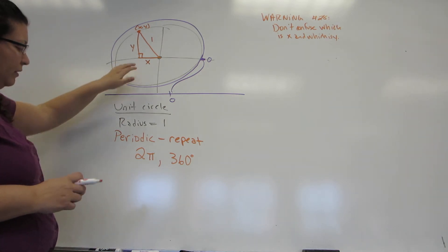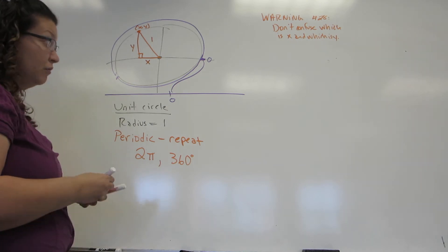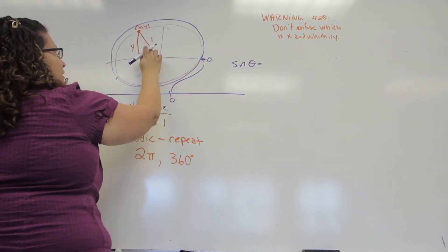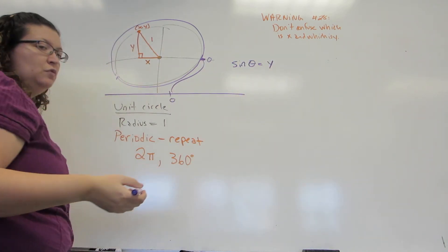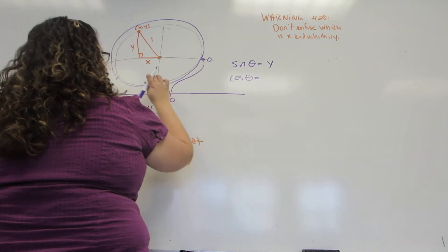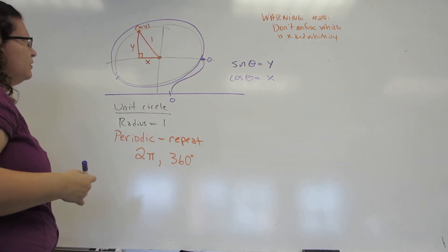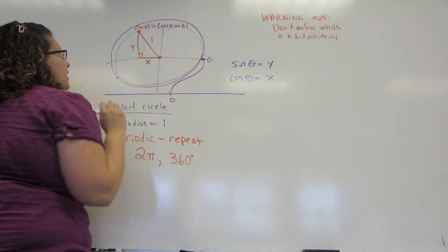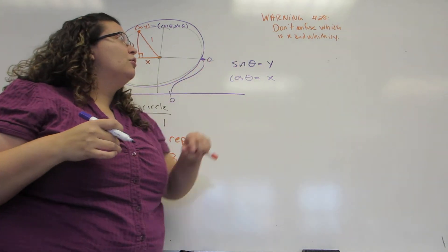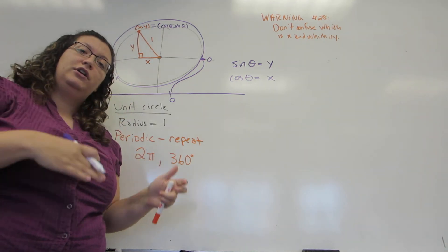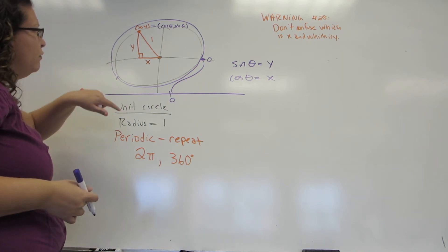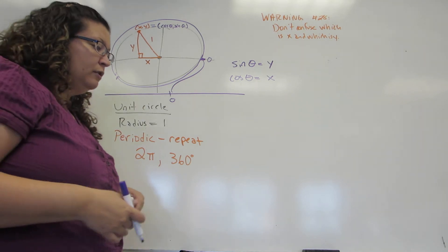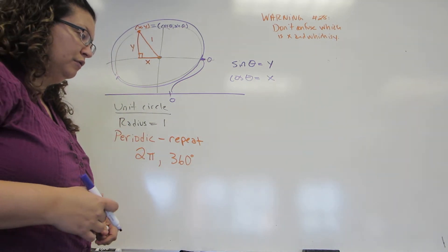We're going to define our trigonometric functions based off the unit circle, which has the hypotenuse always equal to 1. So the sine of our angle is opposite over hypotenuse, but y over 1 is just y. The cosine of our angle is adjacent over hypotenuse, but x over 1 is just x. This means the coordinates of a point on the unit circle are cosine and sine of the angle. Warning: don't confuse which is x and which is y — it's cosine comma sine, not sine first. Once we know cosine and sine, we can get tangent, and from all three we can get the reciprocals for the other three trigonometric functions.